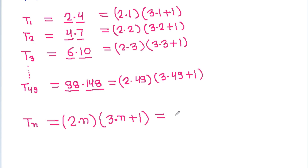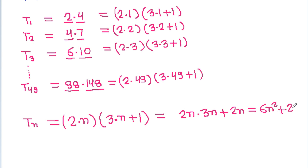So Tn equals 2n times (3n + 1), which gives us 6n² plus 2n. So Tn is 6n² plus 2n.